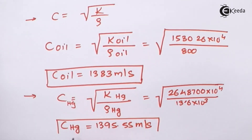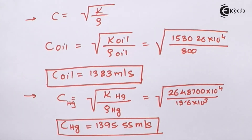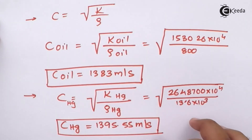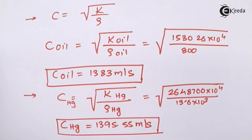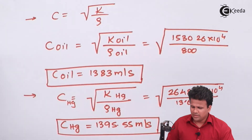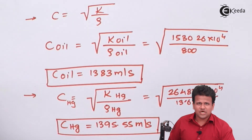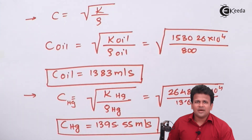So we have calculated the velocity of sound in both fluids. A common mistake which students make here is that they do not calculate the square root of the entire fraction — taking the square root is really important when calculating the velocity of sound. I hope you have understood how to calculate the velocity of sound in two different fluids, crude oil and mercury, by knowing their bulk modulus and density.